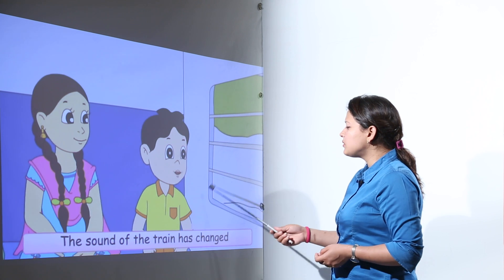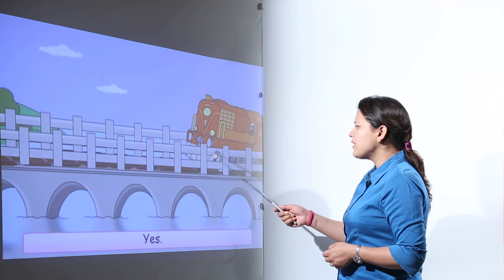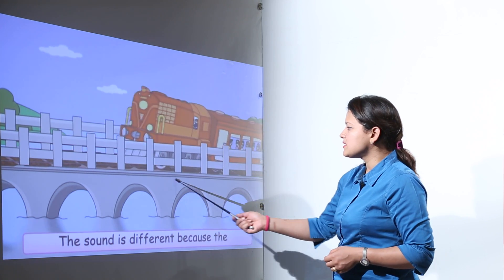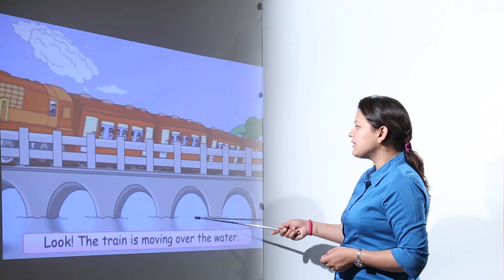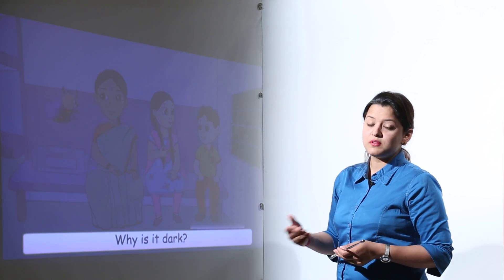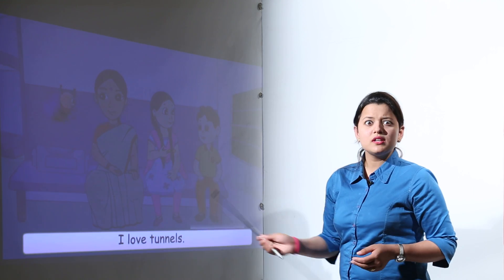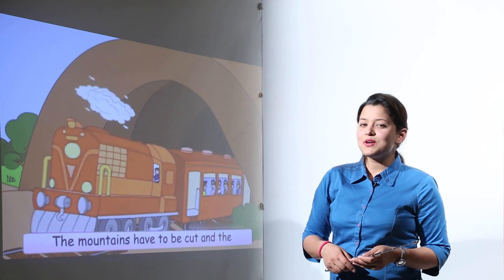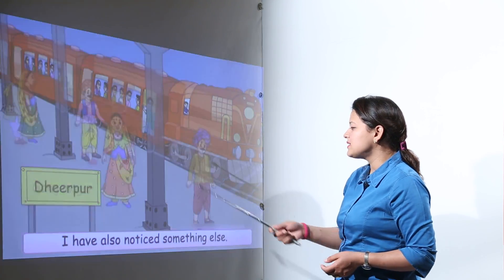They noticed that the sound of the train had suddenly changed. Why was that? Because they were crossing the bridge. The train is moving or crossing the river or the bridge at a very great height, that is why its sound changed and suddenly everything appeared dark. That was because the train was passing through a tunnel.